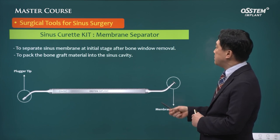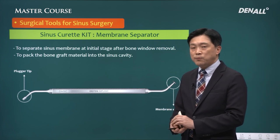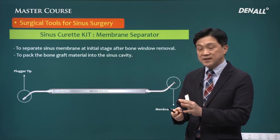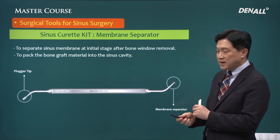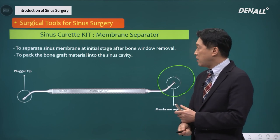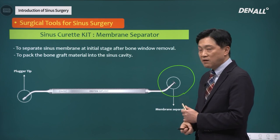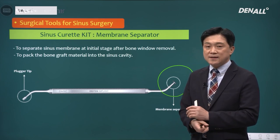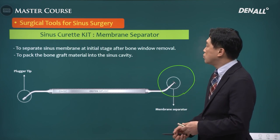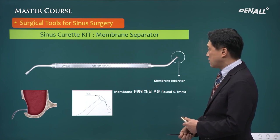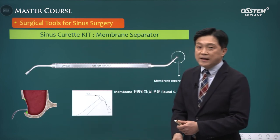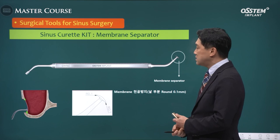The second tool is the membrane separator. In doing lateral approach, out-fracture technique is used to form the lateral approach window. After the bone lid is removed, the membrane separator is used to detach the membrane on the window side. On the other side there's a bone plugger, used to push the bone graft onto the mesial wall or to the anterior side. When beginning and trying to detach these areas, the membrane separator is used.